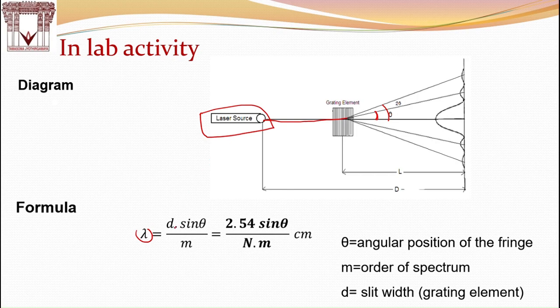In this, D is a grating element. So grating element is nothing but in simple, slit width. In general, the manufacturer is giving the grating in terms of inches, means 15,000 lines per inch.